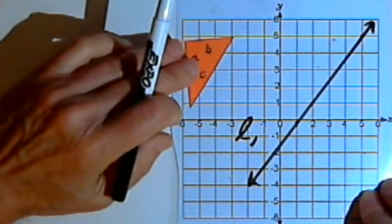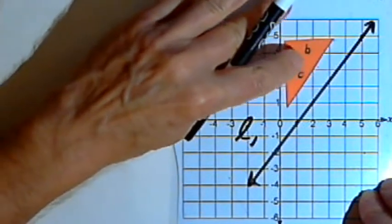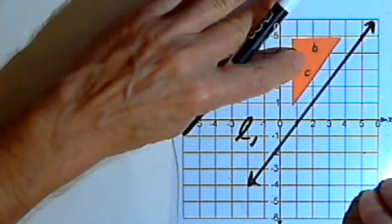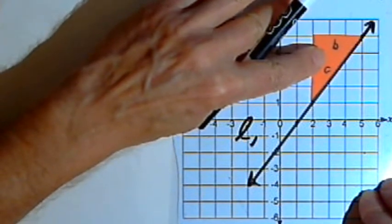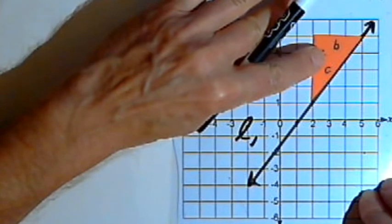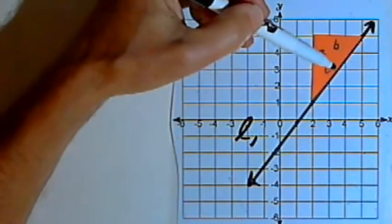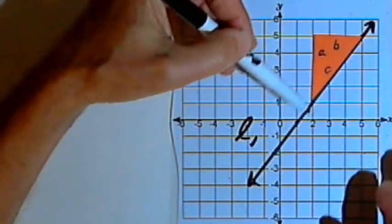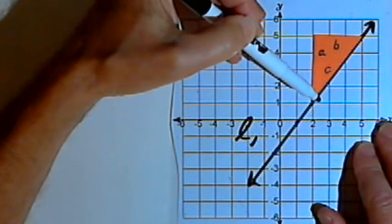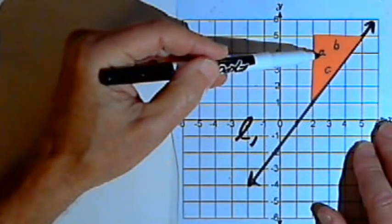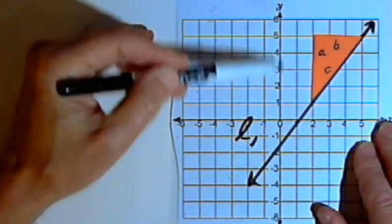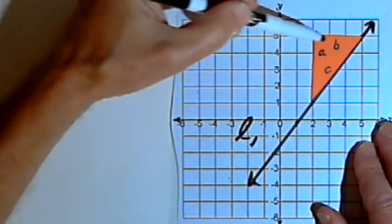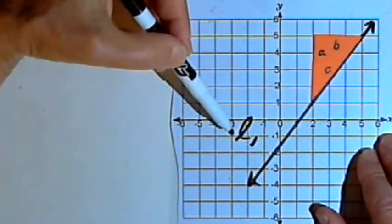So to help me do that, I've cut out this little triangle. It's a right triangle. I've labeled its sides A, B, and C. C is the hypotenuse. And I've cut it out so that if I put side C right along that diagonal line, L sub 1, then side A will be parallel to the y-axis, and side B will be parallel to the x-axis.